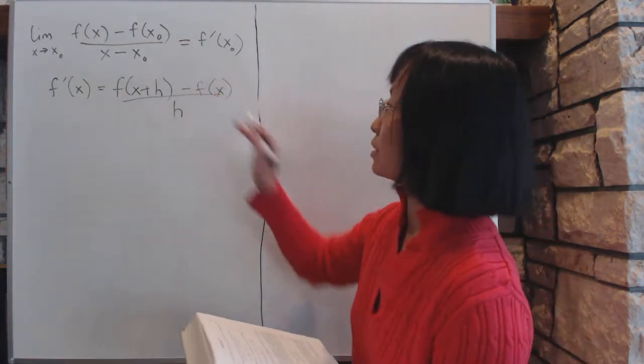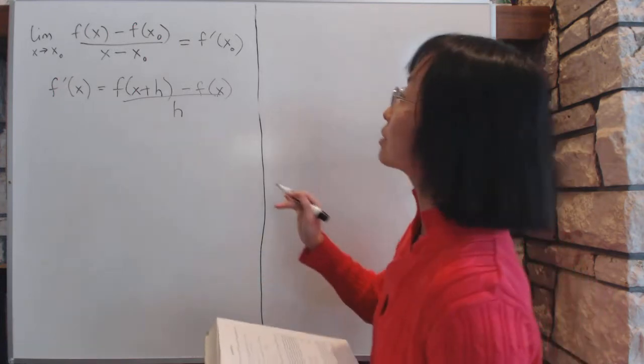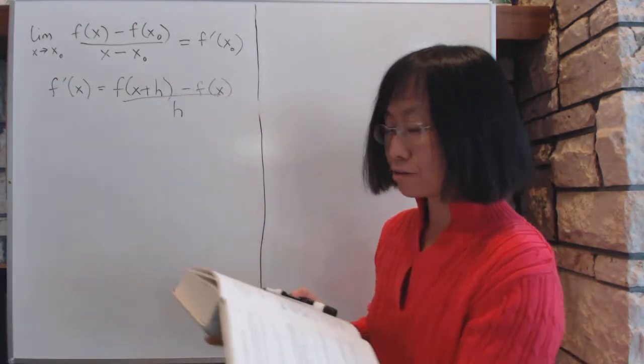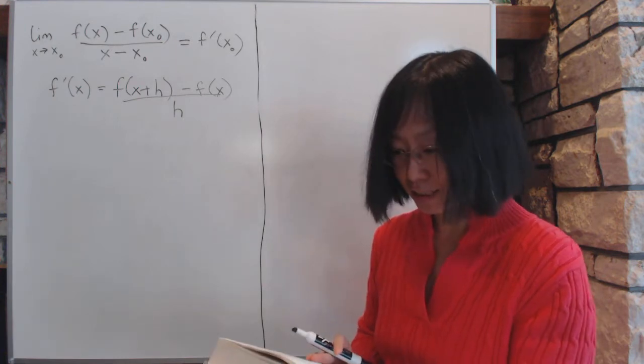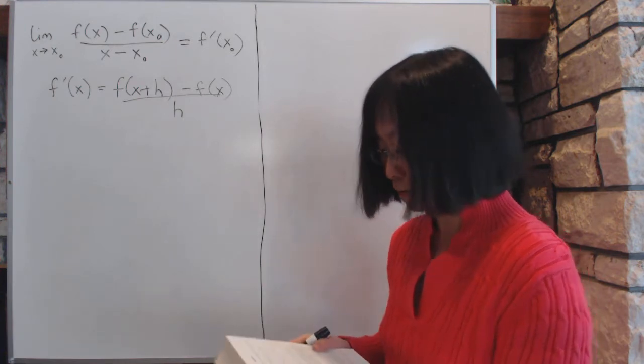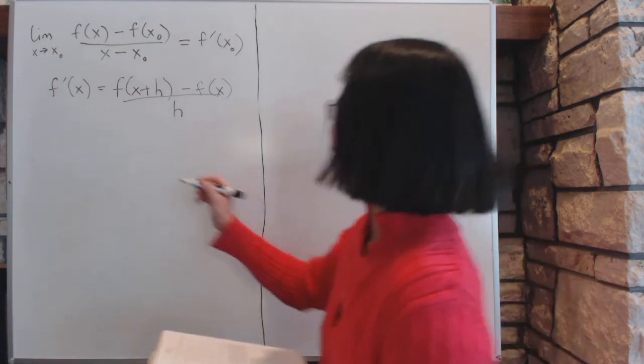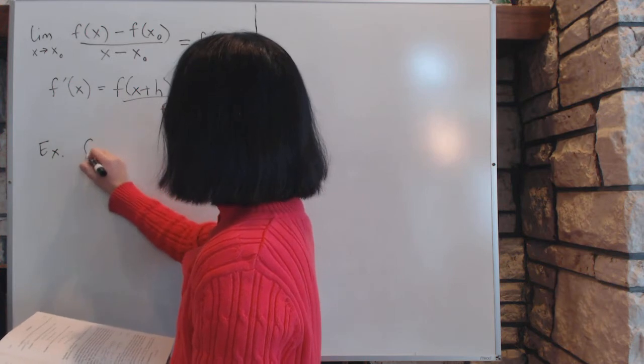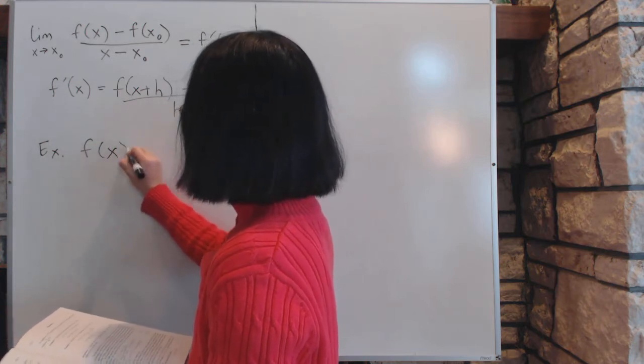Now, the reason we have two forms is because on different occasions, one form might be more useful than the other, and we'll use each one as the situation sees fit. Now, for example, let's say we do a very simple problem. Let's say we have f of x, the example. Let's say f(x) equal to x squared.